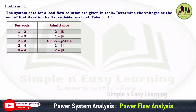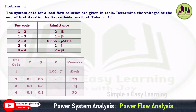Here, the line data are given: bus code and admittance values are given, and here the bus data — the real power, reactive power, and voltage specified — and the bus details are given. With the help of this data, we are going to draw a network.